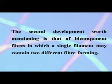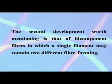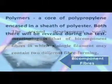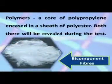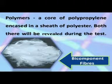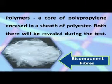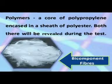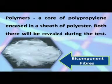The second development worth mentioning is that of bicomponent fibers, in which a single filament may contain two different fiber-forming polymers — for example, a core of polypropylene encased in a sheath of polyester — and both will be revealed during testing.